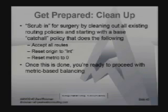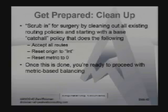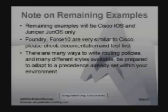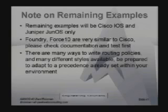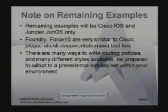The next preparation step is a cleanup. You're going to scrub in for surgery — take out all your old policies universally. Put in, just for starters, a catch-all policy that does nothing but accept every route, reset that origin to internal, reset that metric to zero, and sit back and watch what's going on. Once you have that across the board with the earlier base configurations, you're ready to proceed. The remaining examples will show only Cisco and Juniper. Foundry and Force 10 are very similar though they have their own tweaks — please consult your manuals before trying to apply a Cisco configuration to a Foundry or Force 10.